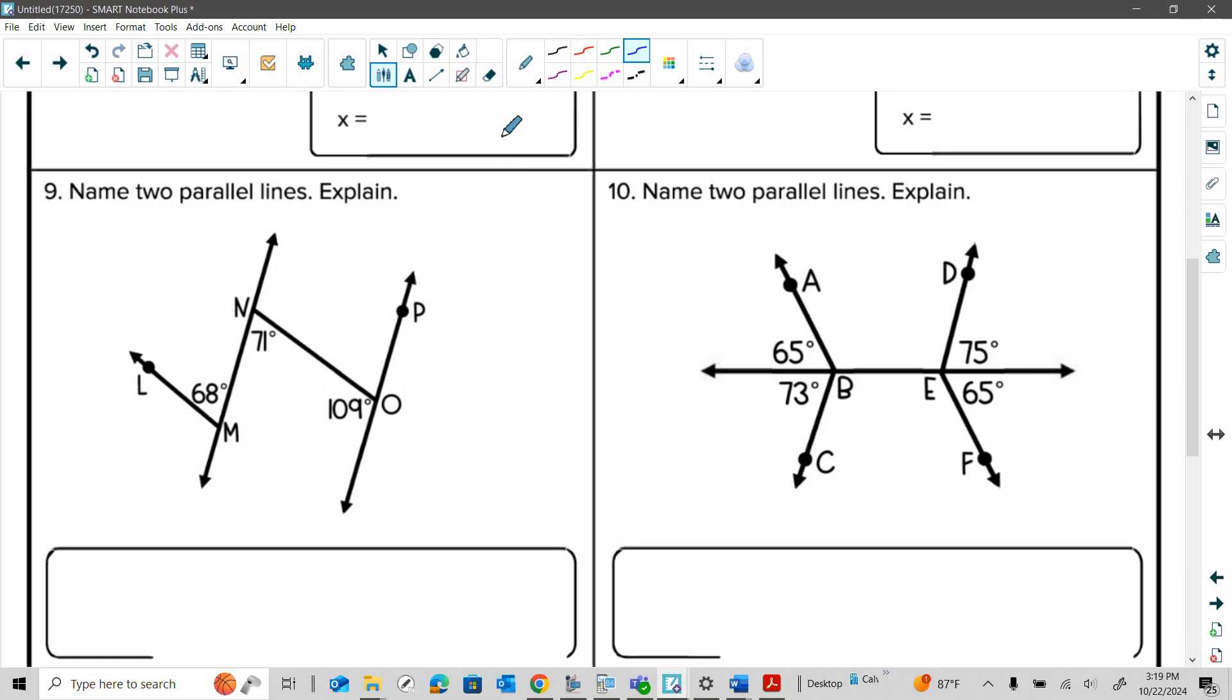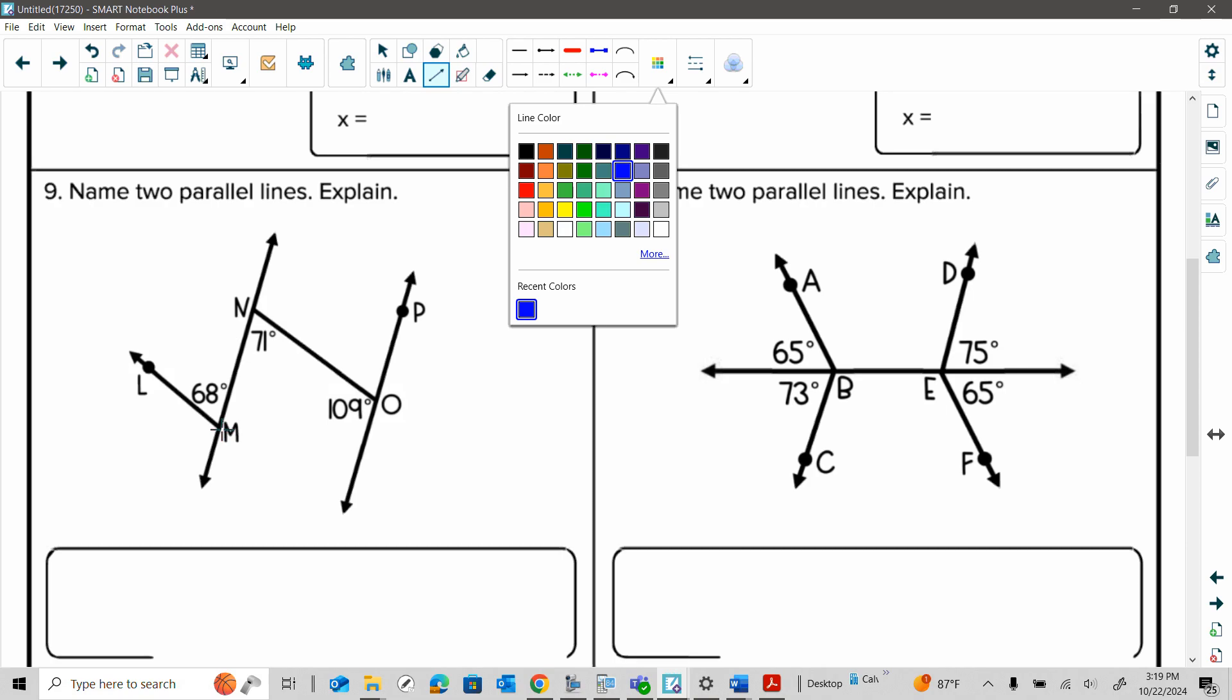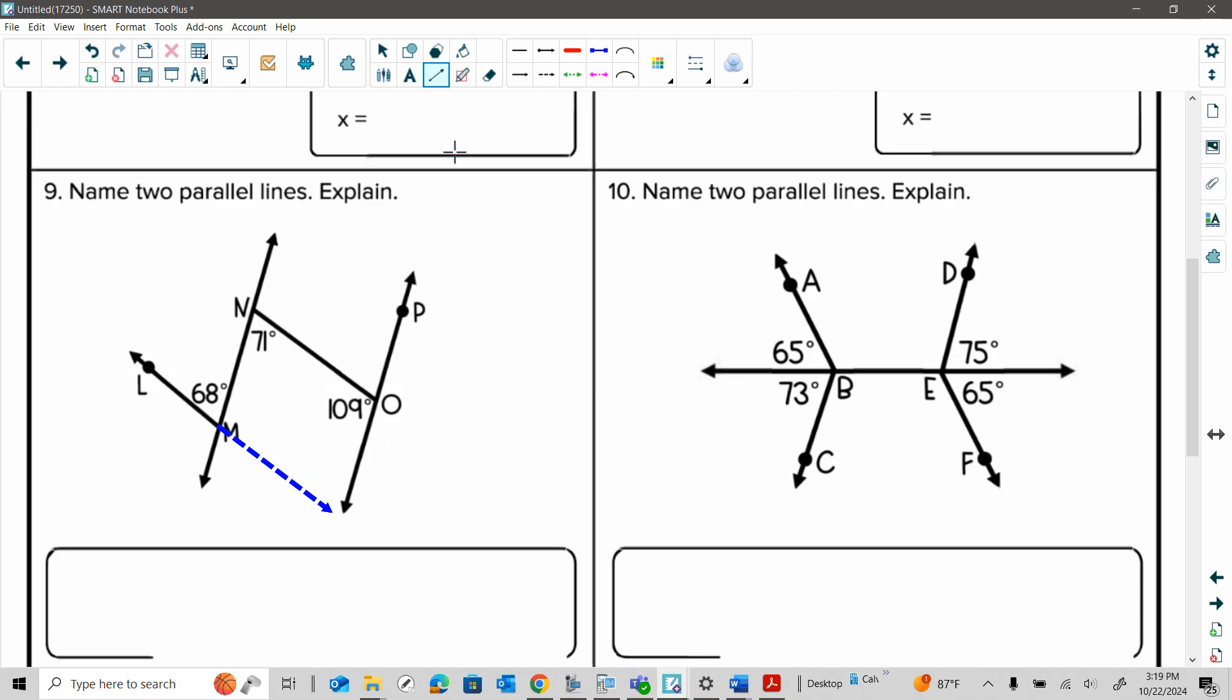So what I would do is, let me just kind of use this little tool right here, and I'm going to make this blue. So I would extend this line this way, okay? So I could create a transversal here, and if I focus on where the angles are, which I have a set of angles here with a 71 and 109. These are same side interior here. Well, that allows me to look at the shared line, which would have to be this line being a transversal.